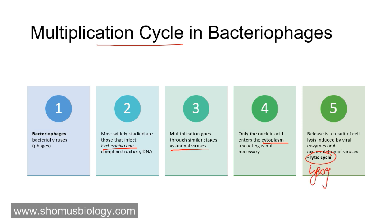Bacteriophages can be involved in two different types of cycles. In the lytic cycle, after production of sufficient bacteriophage, the phage cracks open the host cell like E. coli and goes outside to infect another healthy host. In the lysogenic cycle, the genetic component of the bacteriophage is incorporated and recombined with the bacterial genome, where it can stay for several generations. This phase is known as the lysogenic phase — in this phase the phage is not virulent, not killing the host, and not producing further phage particles. However, the lysogenic phase is not constant; it must eventually convert into the lytic phase.